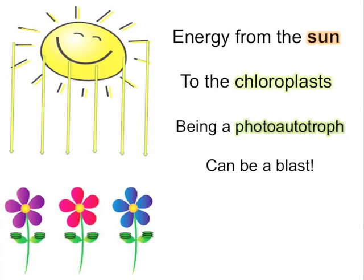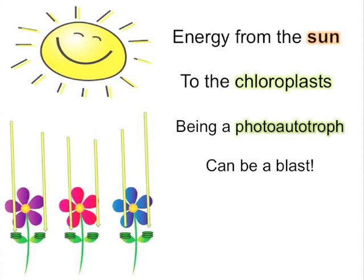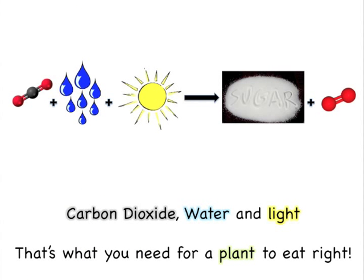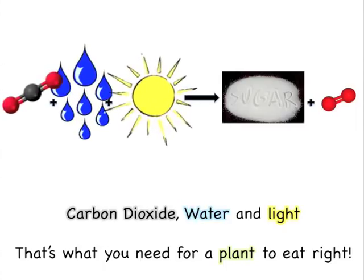Energy from the sun to the chloroplast. Being a photoautotroph can be a blast. Carbon dioxide, water and light. That's what you need for a plant to eat right.